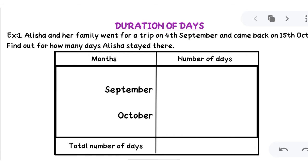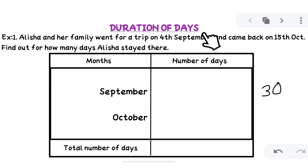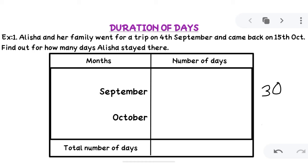Now we will find out the number of days for September and October. We know that September has 30 days. The family went on 4th September, which means till the 3rd they were in town only — they left on the 4th. So the number of days of September counted in the trip will be 30 minus 3, because they were in town for 3 days. So 30 minus 3 gives us 27. In the month of September they were on the trip for 27 days.